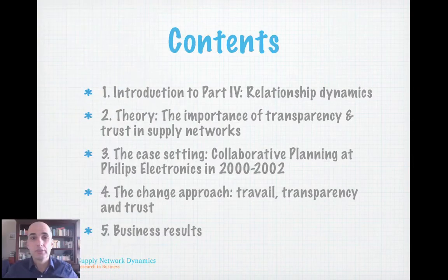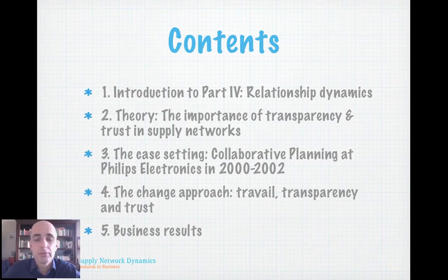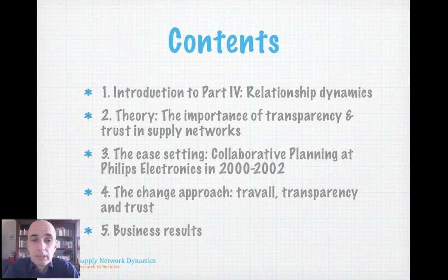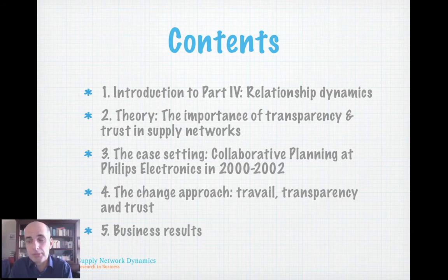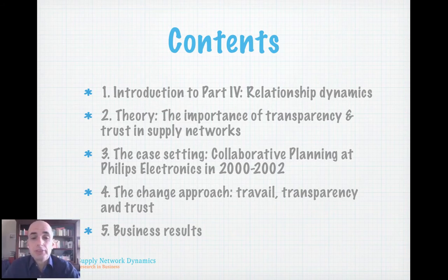The contents of this chapter are: first, relationship dynamics as an overriding theme for chapters 10, 11, and 12. Then there's quite some theory on how the dynamics of buyer-supplier relationships evolve over time. We then move to the case setting, which is set at Philips Electronics in 2000, 2002, 2004, on collaborative planning for the explosively growing business of optical storage media — DVDs, CDs, etc. Then something on the change approach, in which we are actually trying to use those relationship spirals in a positive sense, and then some business results.